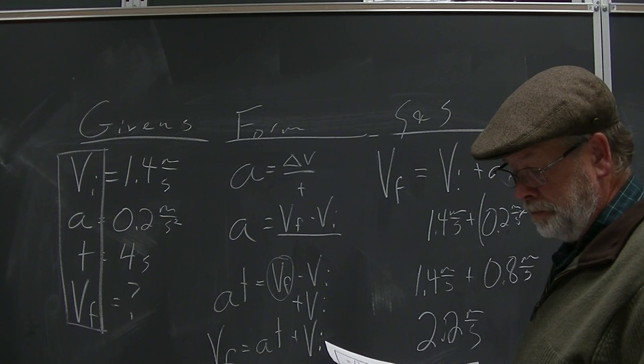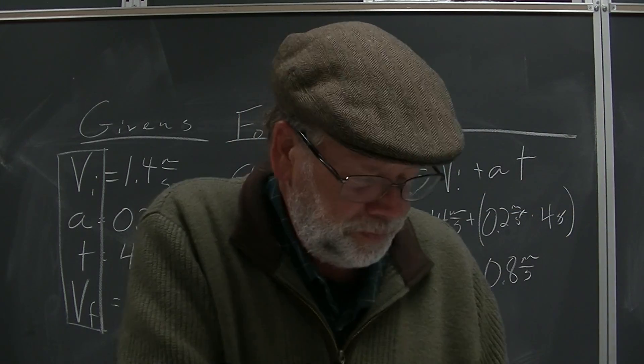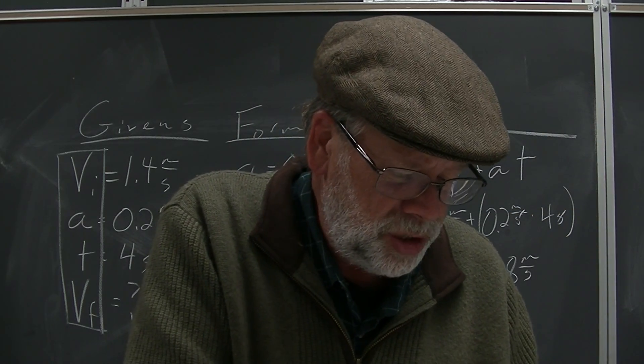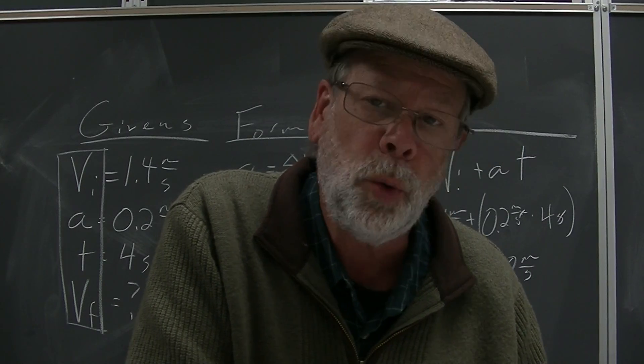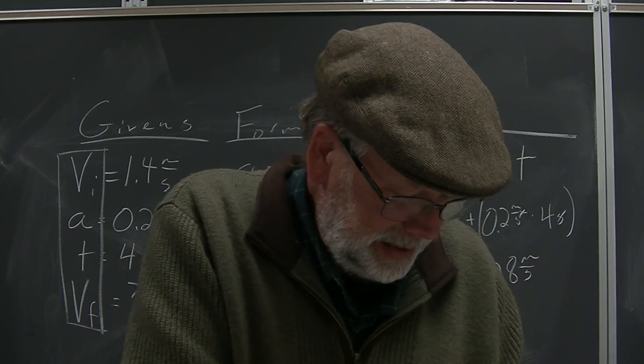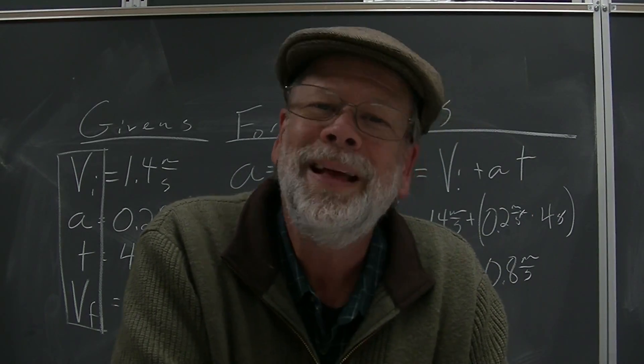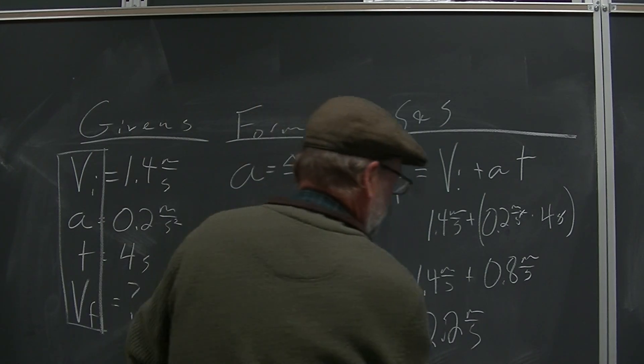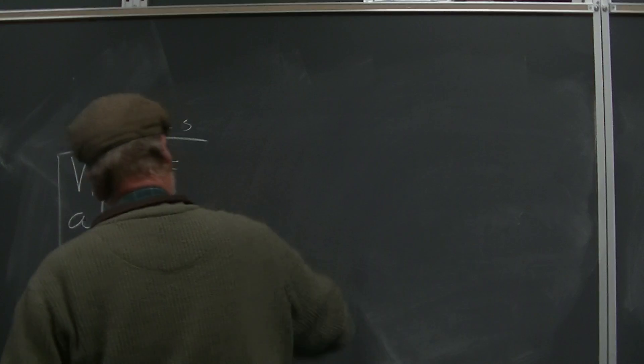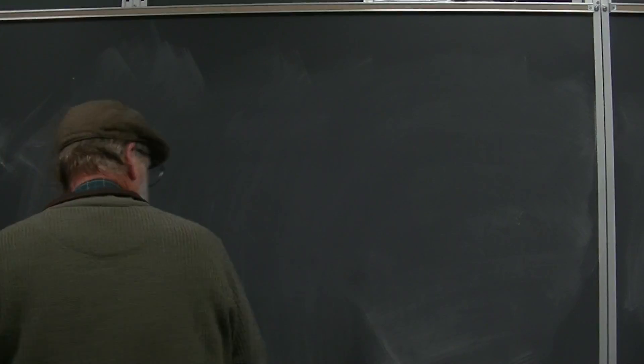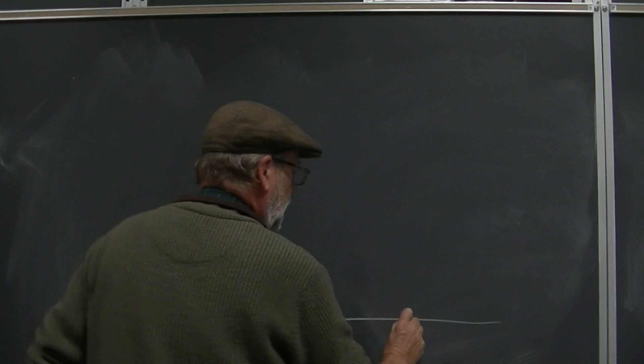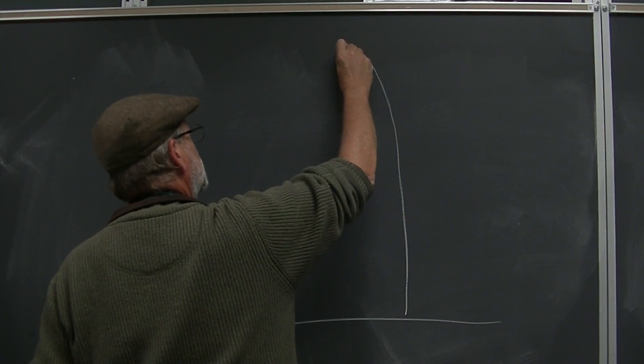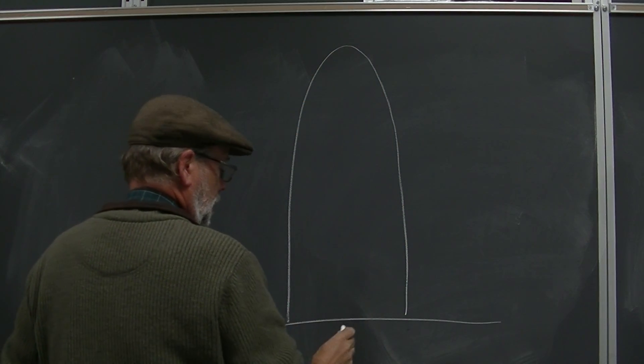So 1.4 plus 0.8 is now 2.2 meters per second, so moving faster. Beautiful. Look at the next problem: a bullet is shot into the air and returns to the ground 22 seconds later. It's asking how high did the bullet go. Let's think about this for a second. Bullet shot into the air, up, up, up, up, up till it comes to a stop and down, down, down.